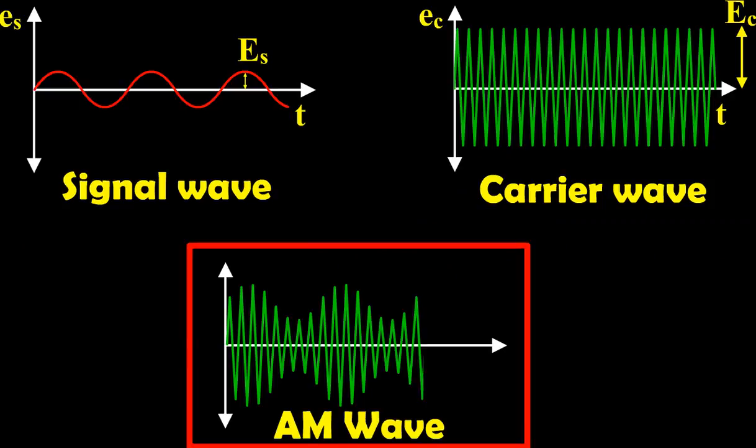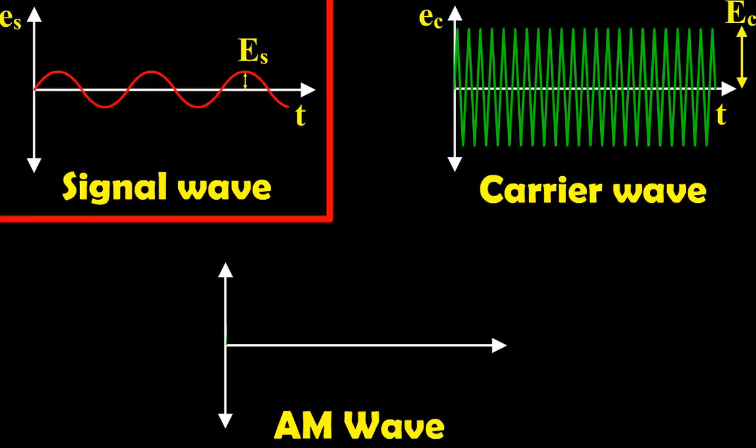The frequency and the phase of the carrier wave remain constant. The first visual shows the principle of amplitude modulation. The diagram also shows the audio-electrical signal of frequency fs.